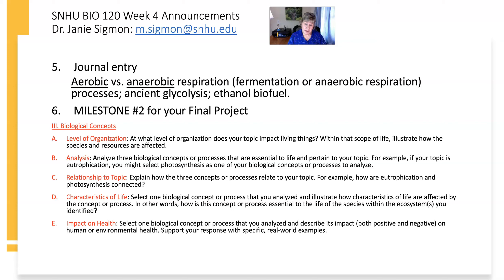The relationship to the topic: now you're going to talk about how those three biological processes relate to your particular topic. You're describing them in the analysis section, and then you're relating them to your topic in section C. In section D, you're going to select one of them and illustrate how the characteristics of life — like metabolism, for example — are affected by your concept or process. You remember those characteristics of life — the seven or eight that we listed, like response to stimuli, reproduction, and so on. How does one of your processes affect characteristics of life?